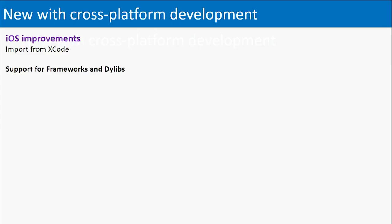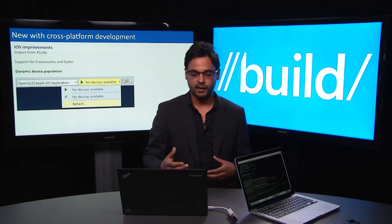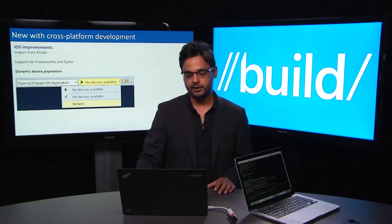With iOS 8, developers are now allowed to use frameworks and dynamic libraries. When you're using Visual Studio, you can still leverage and reference frameworks and libraries easily. We've also improved the story for dynamic device population. When you're connecting a device paired to your PC for building your iOS app in Visual Studio, you can easily remove it, add it, look into the simulators — we've basically improved that experience.